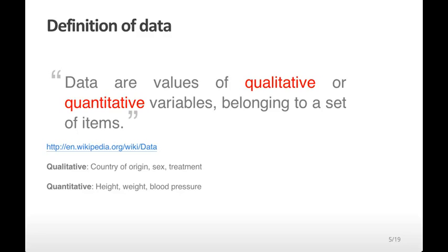The variables can be divided into qualitative or quantitative variables. Qualitative variables are variables that can be defined by a label and have discrete values. So for example, some qualitative variables in a clinical study would be country of origin, the sex of the patients, or the treatment that they've received.